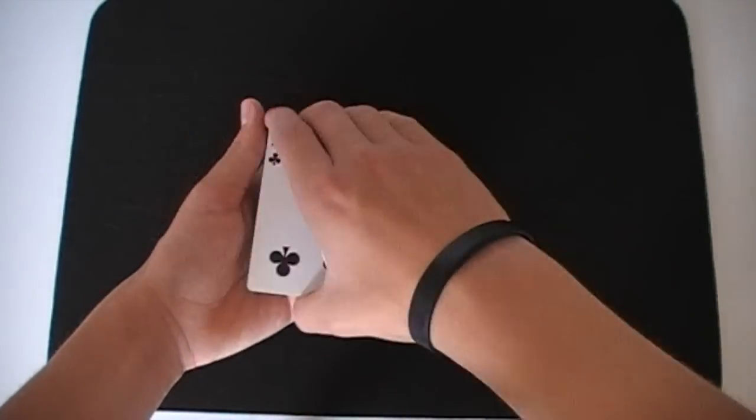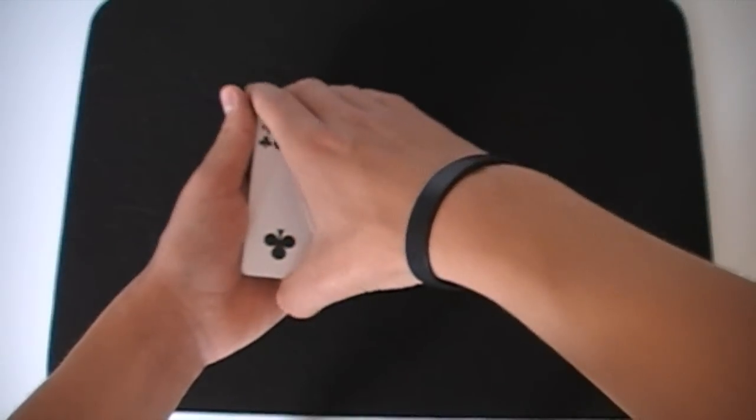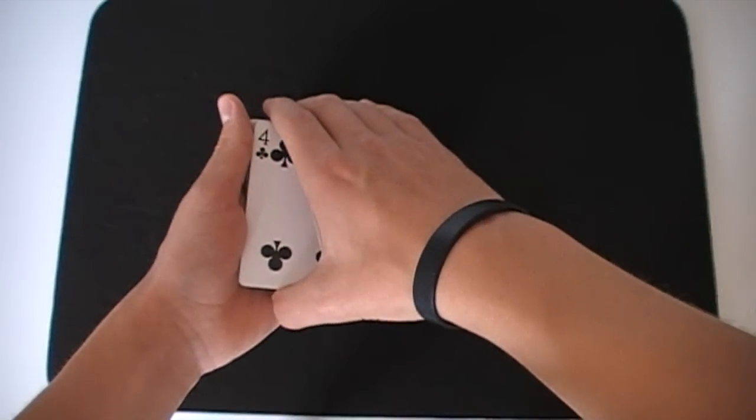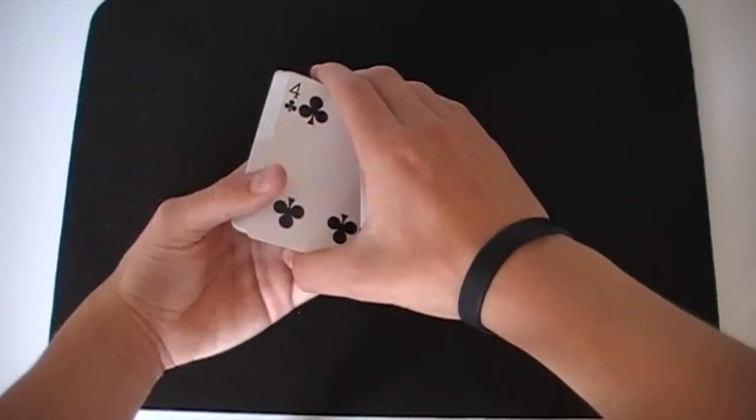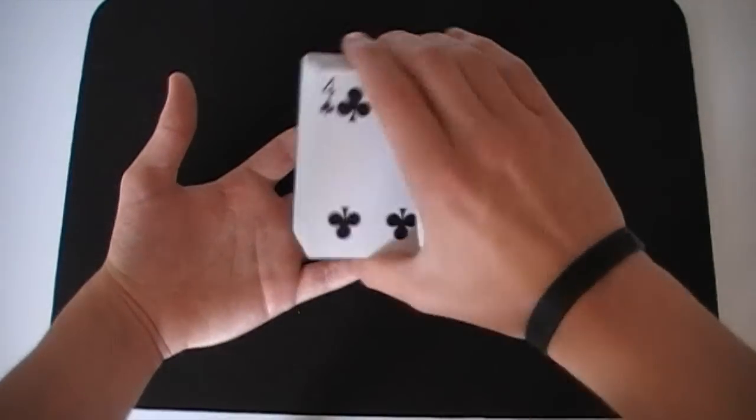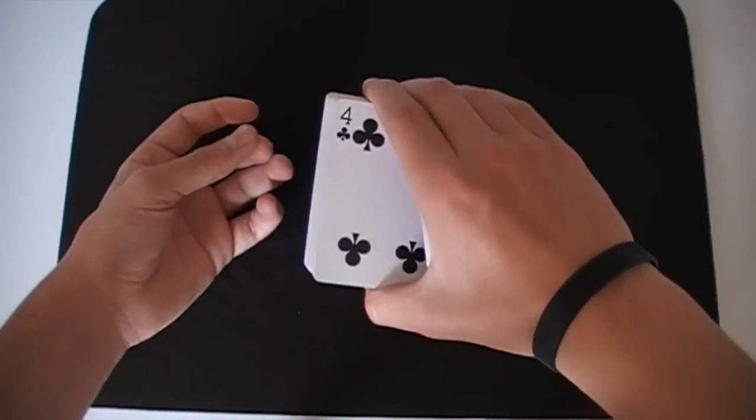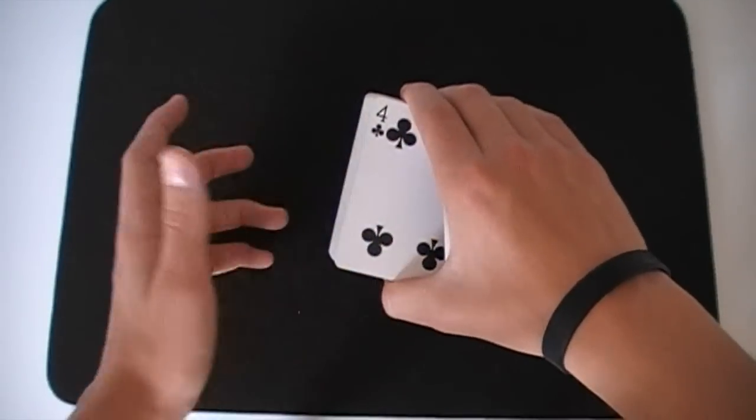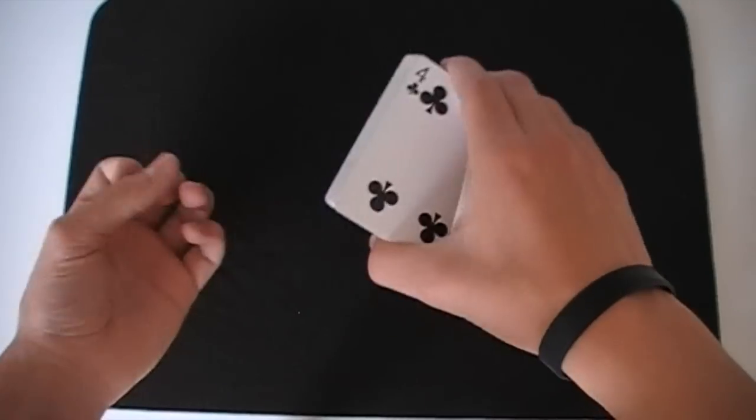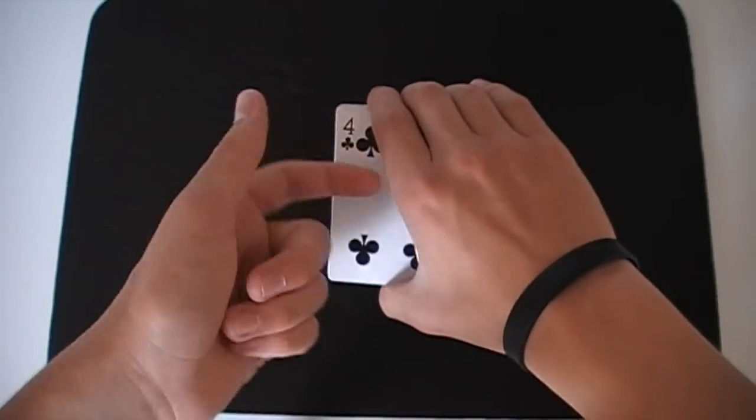So once you've got that card in your palm, you actually want to hold the deck in your right hand as well. And there are a couple of reasons for this, but the main reason is that if you hold a deck in your right hand and you've got a card palmed in your right hand as well, you can show your left hand completely empty and people will just assume your right hand is empty too.